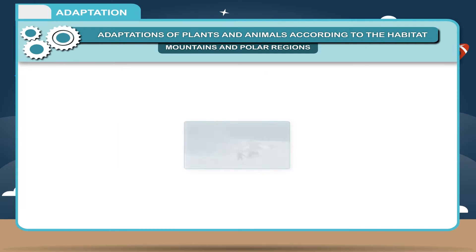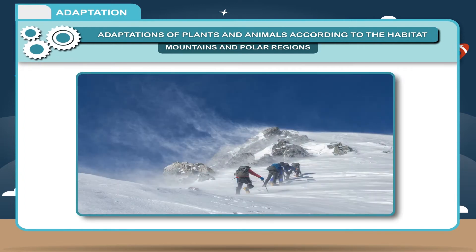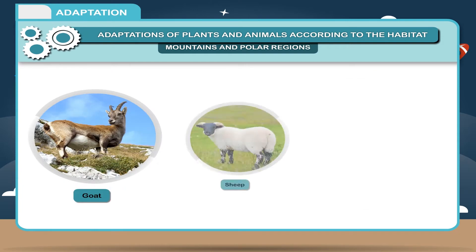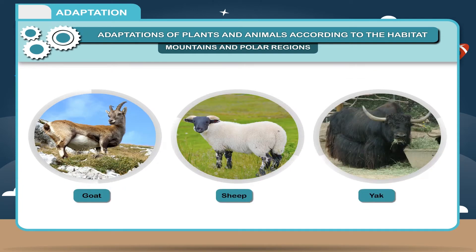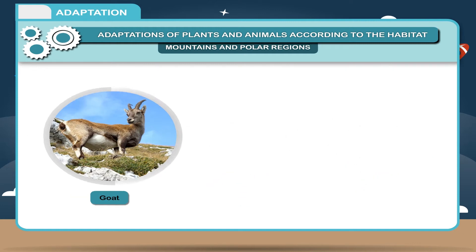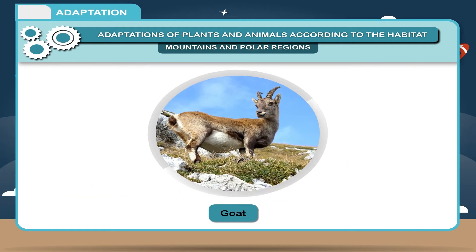Animal Life. These habitats are normally very cold and windy. Goat, sheep, and yak are the animals found in mountain regions. Animals living in mountain regions are adapted to the conditions here. They have thick skin or fur to protect them from cold.